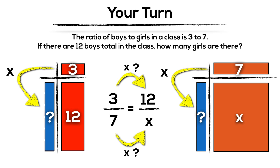So if I determine what times 3 equals 12, I can then figure out that same factor times 7 in order to determine the number of girls.